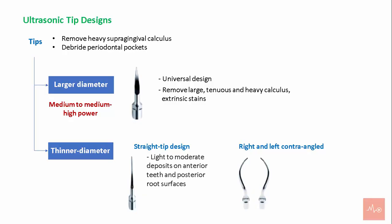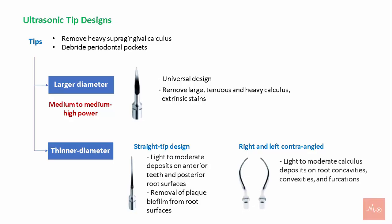Straight thin tips are used to remove light to moderate deposits on the anterior and posterior root surfaces and to remove plaque biofilm from root surfaces. Contra-angle tips are used to remove light to moderate calculus deposits on root concavities, convexities, and furcations, and to remove plaque biofilm from root surfaces. Lower power settings are recommended when using thin diameter tips.